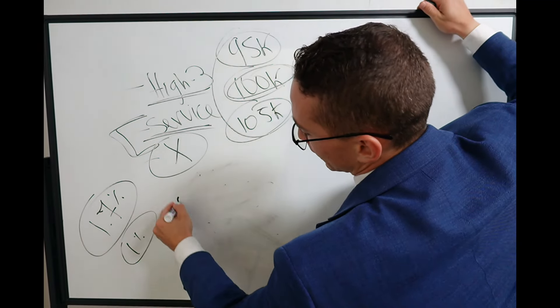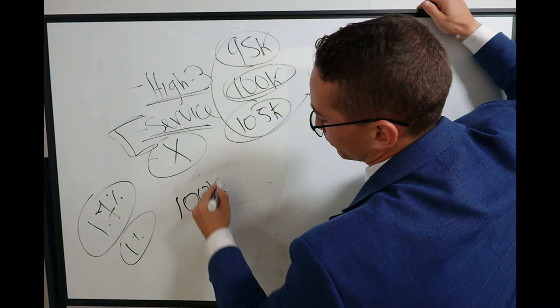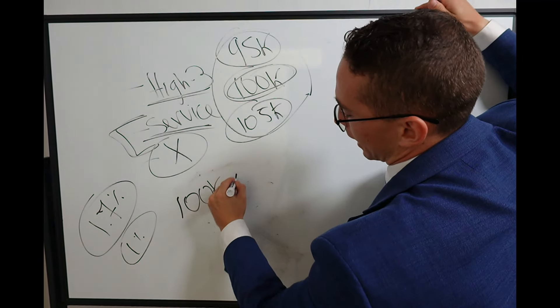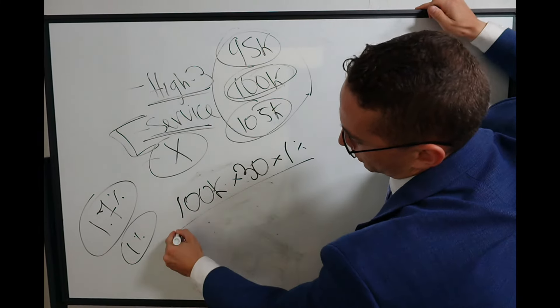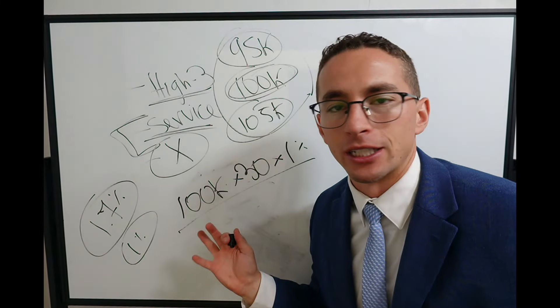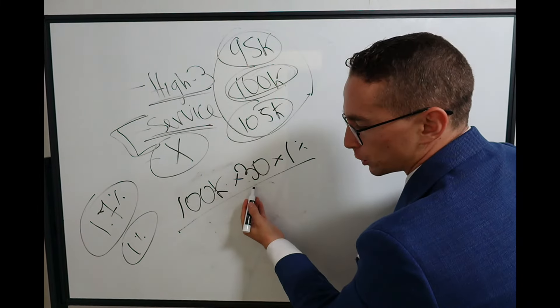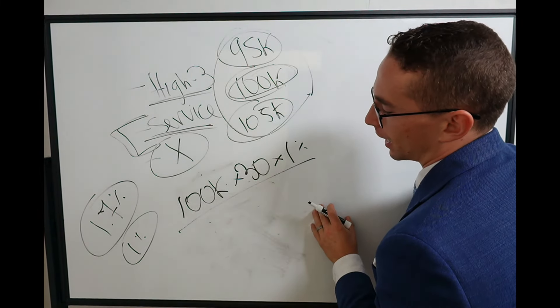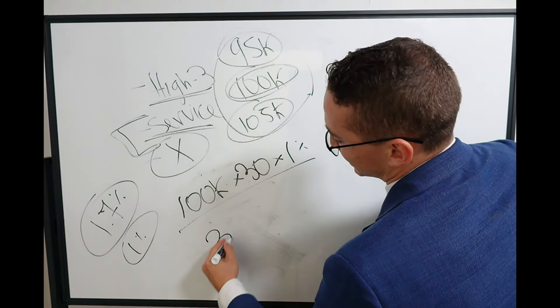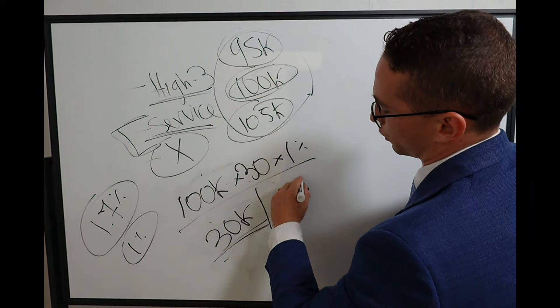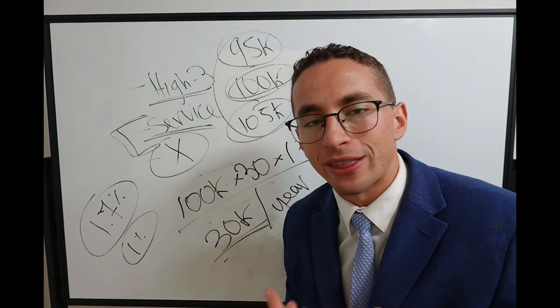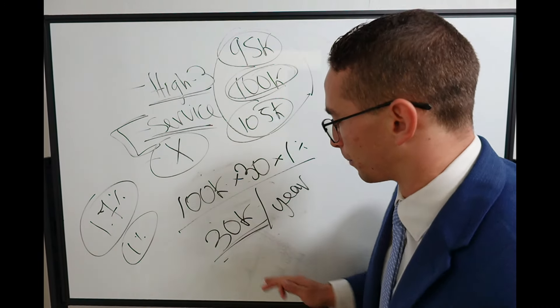So let's do an example. Let's say someone's high three is $100,000, let's say they have 30 years of service, and their multiplier is 1%. That is how your pension is calculated. High three multiplied by years of service, multiplied by the multiplier. So in this example, we get $30,000, and that's per year.